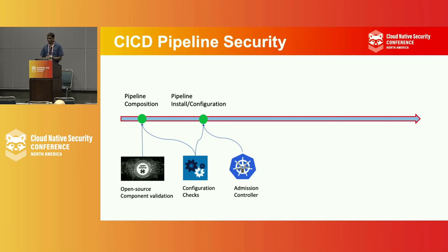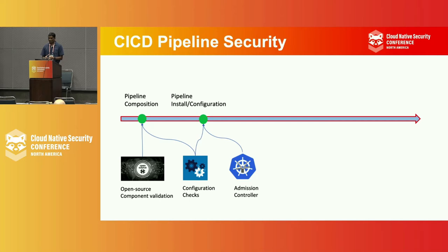We also need to ensure that when we define them, we configure them securely. Then we set up or install our pipelines. At this point we need to ensure that our pipeline is properly configured, because pipelines have access to a lot of credentials — registry credentials, GitHub credentials, and keys — so it's important that they are securely configured.